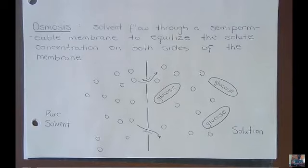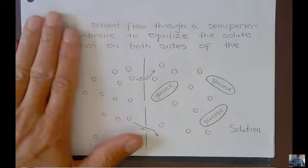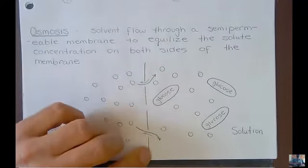Let me describe to you what's happening with osmosis and then I'll show you the formula that you can use to calculate the osmotic pressure. In order for osmosis to occur, you need a semi-permeable membrane.